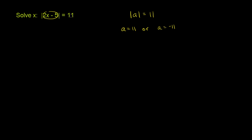Because if this is equal to 11, the absolute value of 11 is 11. If this thing over here is equal to negative 11, when you take its absolute value, it'll still be equal to 11. So let's write that down. So 2x minus 5 could be equal to 11, or 2x minus 5 could be equal to negative 11.